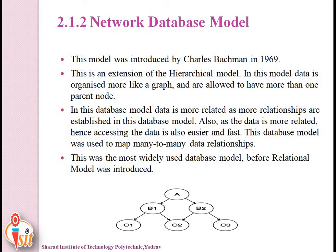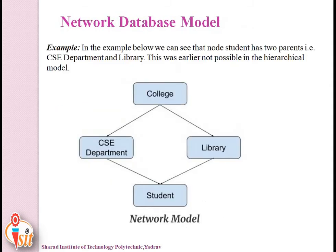The network database model was introduced by Charles Bachman in 1969. It is an extension of the hierarchical model — one step ahead. In this model, data is organized more like a graph and nodes are allowed to have more than one parent. Unlike hierarchical databases where a child has only one parent, in the network model there are multiple parents for a child. It supports many-to-many data relationships. An example: a student node can have two parents — the CSE department and the library — which is not possible in the hierarchical model.